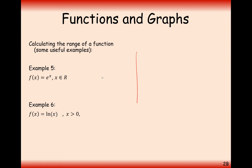Next we have e to the x. If you remember 2 to the power of x, it's very similar — an exponential graph with an asymptote at 0 and passing through 1. We only have y-coordinates above the x-axis, so our range is f of x is greater than 0. It's never going to equal 0 because it's asymptotically approaching 0 but never actually reaching it.